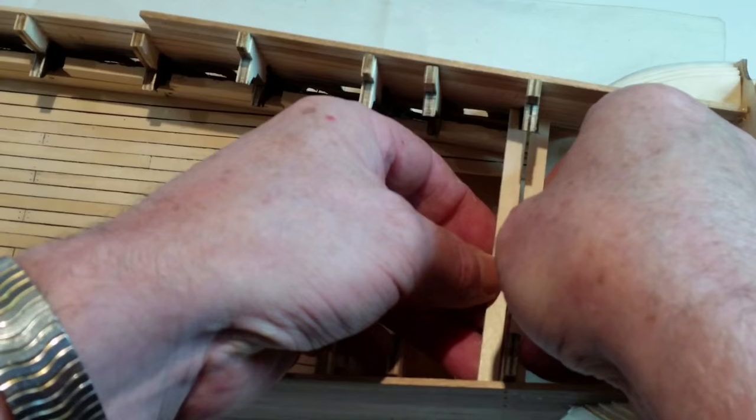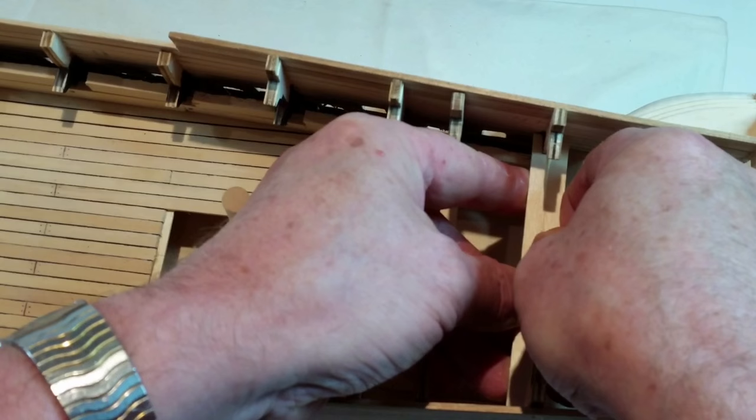Due to the shape of frame 30, you cannot insert the beam in one piece, so glue the pieces together at the same time as gluing them to the frame. Repeat for frames 28 and 27.